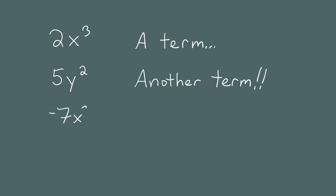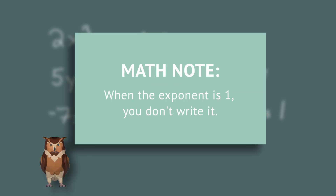Negative 7x cubed z is a term with two variables. Here, the exponent of z is 1. When the exponent is 1, you don't write it.